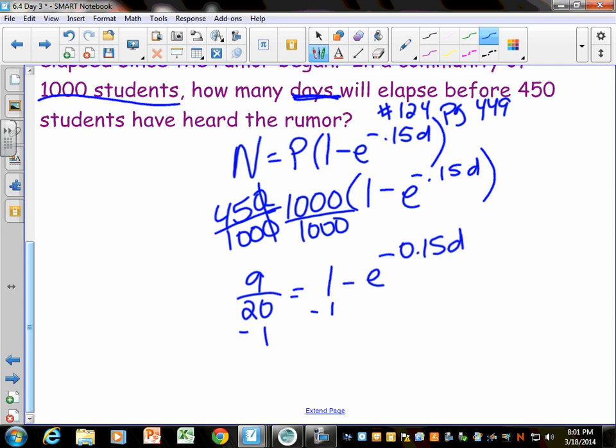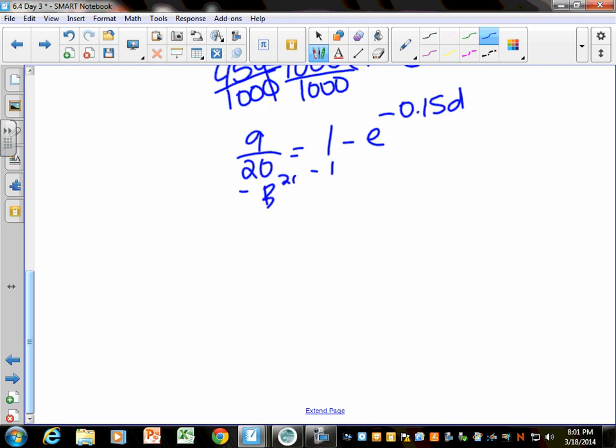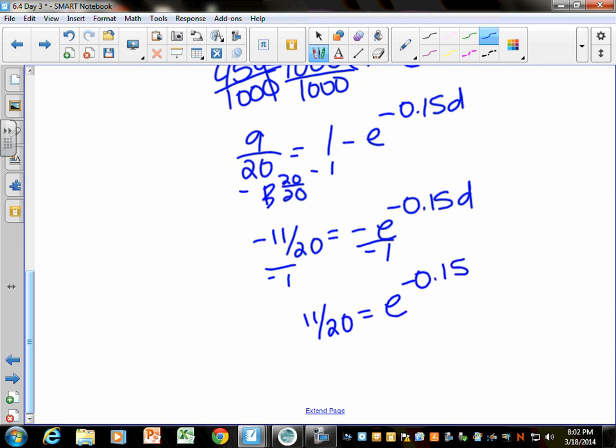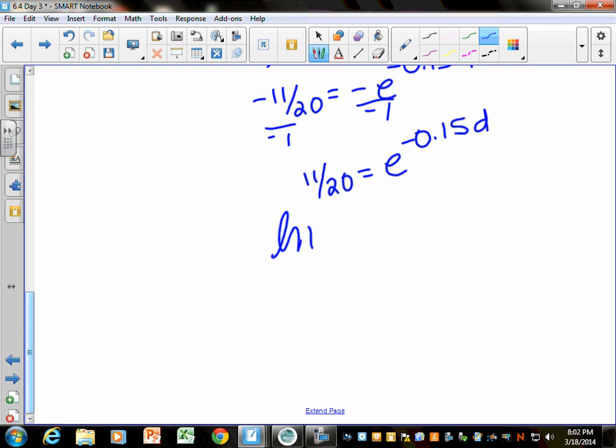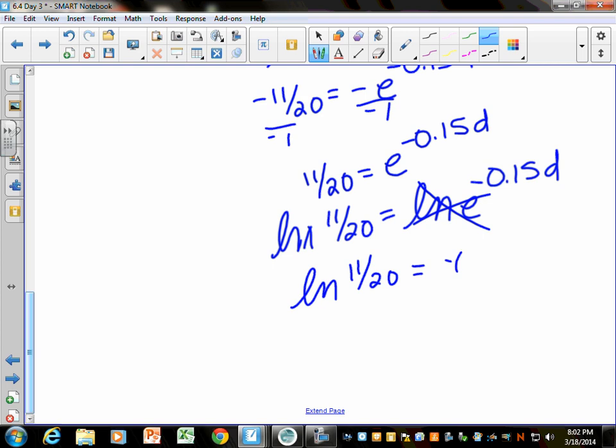So, I'm going to subtract 1. 1 is just 20 20ths. So, that's like 9 minus 20 20ths. 9 minus 20 would be negative 11 20ths. Again, a lot of algebra in this. To get rid of the negative, I could just divide both sides by a negative. And I would get 11 20ths equals e to the negative 0.15d. If I can get e by itself, just like the last problem, we want to ln both sides. And we're allowed to do that because it's an equation. So, I'm going to ln 11 over 20. And I'm going to ln e to the negative 0.15d. And again, why do I do this? Because ln and e are inverses of each other.